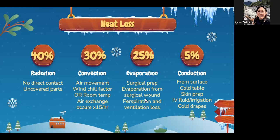25% of heat is lost through evaporation — that is your surgical prep, patient sweat, and mechanically ventilated patients lose heat that way too. 5% of heat is lost through conduction — the cold OR table, skin prep, IV fluid irrigation, and cold drapes. To summarize: conduction 5%, evaporation 25%, convection 30%, radiation 40%.